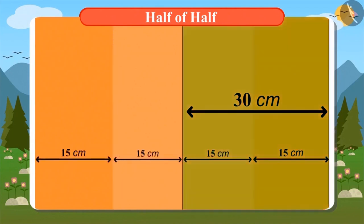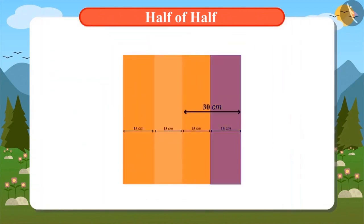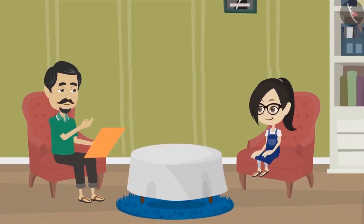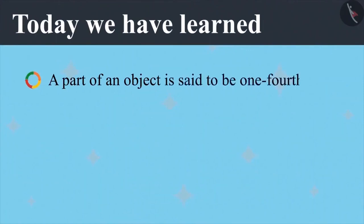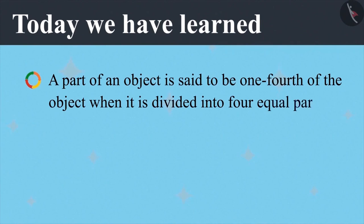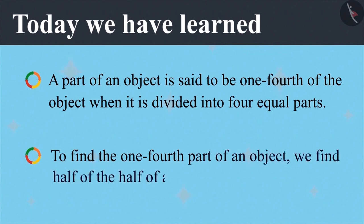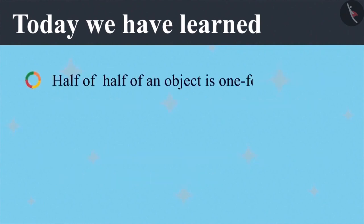Now see — on both the halves of this paper there are marks. You can measure this too. One half of this paper is 30 centimetres and half of half is 15 centimetres. Now this paper is divided into four equal parts. This part is half of this paper, and when we divided this half into half again, we got a smaller part. This half of half part is called one-fourth of this paper. Now this paper is divided into four equal parts and each part is one-fourth of the whole paper. To find one-fourth, we find half of the half of an object. Half of half of an object is one-fourth of that object.